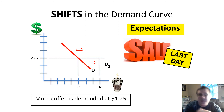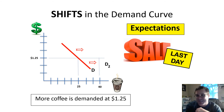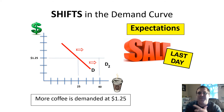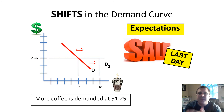Expectations can also shift demand. People will buy things if they see the word 'sale.' There are people that will buy things just because it says sale — that's why Kohl's always has things on sale. You see it, you think it's a deal, and you buy it.